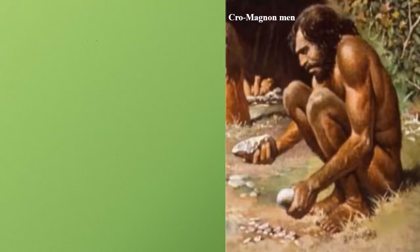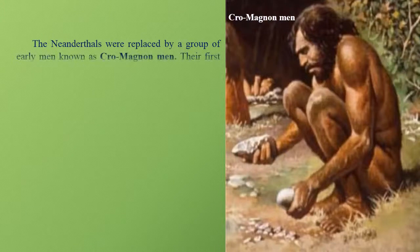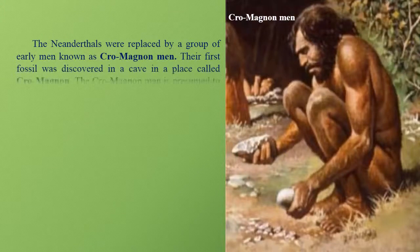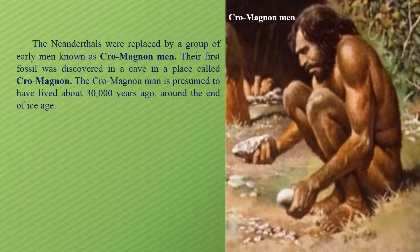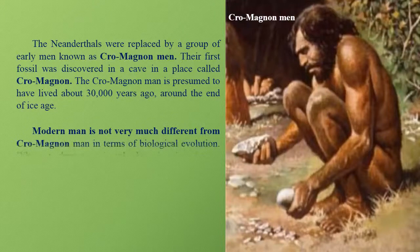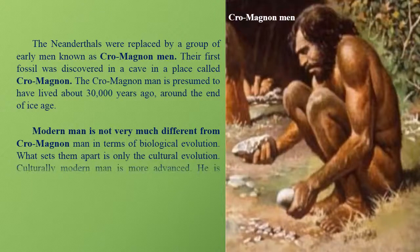Neanderthals were replaced by a group of early men known as Cro-Magnon men. Their first fossil was discovered in a cave in a place called Cro-Magnon. The Cro-Magnon man is presumed to have lived about 30,000 years ago, around the end of the Ice Age. Modern man is not very much different from Cro-Magnon men in terms of biological evolution, with the only difference being cultural evolution.